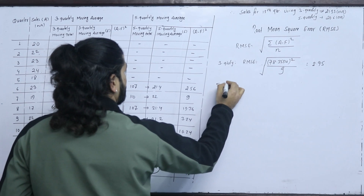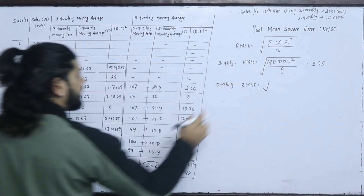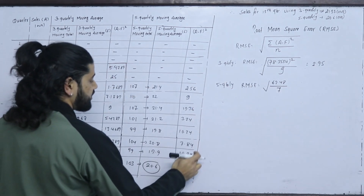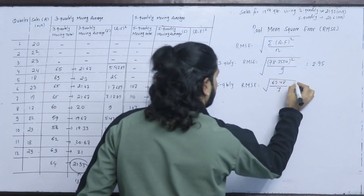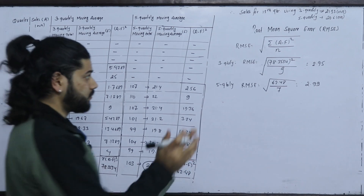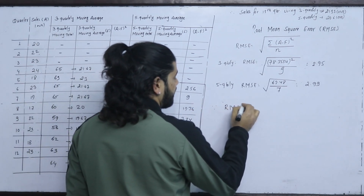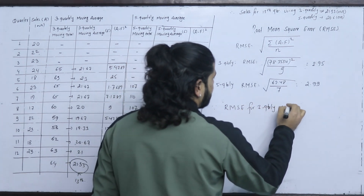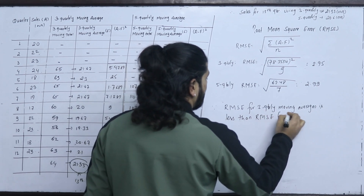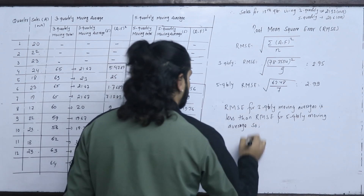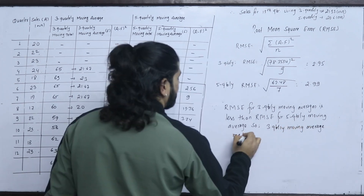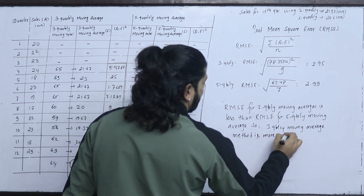For RMSE of 5-quarterly moving average: sum of A minus F squared is 62.48, divided by 7 observations, square root gives RMSE equals 2.99. Since RMSE for 3-quarterly moving average is less than RMSE for 5-quarterly moving average, the 3-quarterly moving average method is more consistent for the given data.